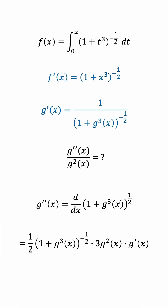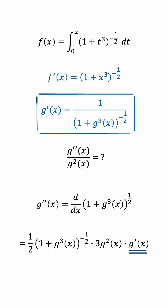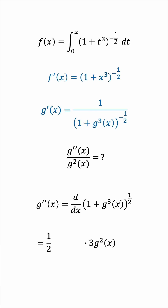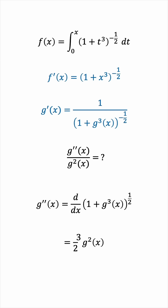And now we know g prime of x. The beautiful thing about it is that this is precisely the reciprocal of this term, meaning that this term and g prime will cancel each other out, giving us 3 over 2 g squared of x.